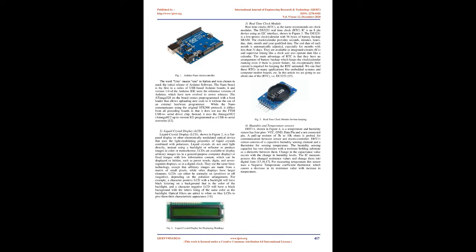A good example of the Arduino Nano microcontroller is shown in figure 1. The Nano board is the first in a series of USB-based Arduino boards, and version 1.0 of the Arduino IDE were the reference versions of Arduino, which have now evolved to newer releases. The ATmega328 on the board comes pre-programmed with a bootloader that allows uploading new code without the use of an external hardware programmer. While the Nano communicates using the original STK500 protocol, it uses the ATmega16U2 (ATmega8U2 up to version R2), programmed as a USB to serial converter.